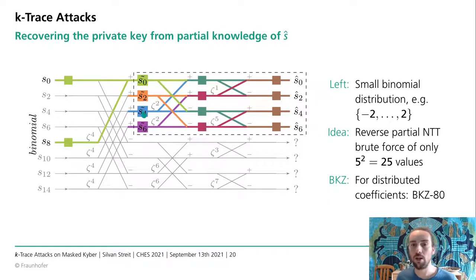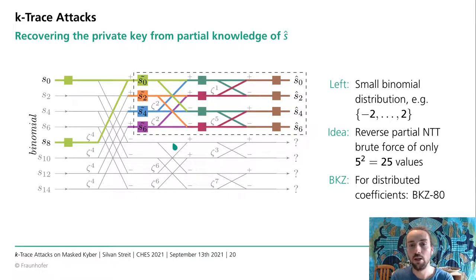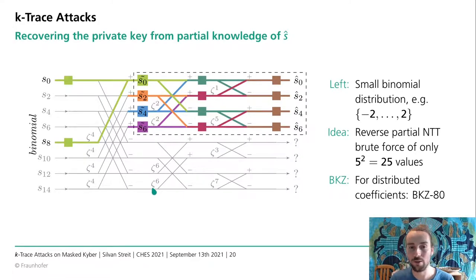For the distributed sparse case, we cannot use the structure of the NTT again. We have to resort back to BKZ, and we were able to solve this with BKZ-80 in most cases. However, this requires some computational time — we only used a SAGE implementation — but we showed it's possible, and this is an offline part of the attack performed after the traces were recorded.